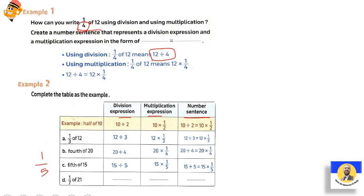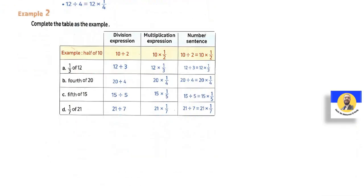For one-seventh of twenty-one, we get twenty-one divided by seven, which equals twenty-one times one-seventh — they are the same meaning.